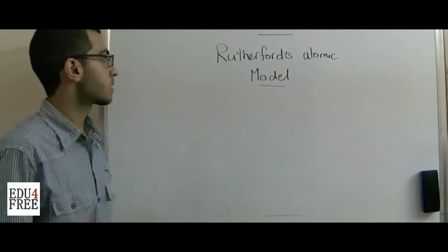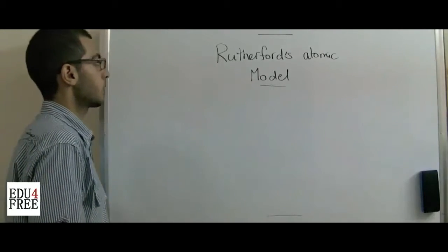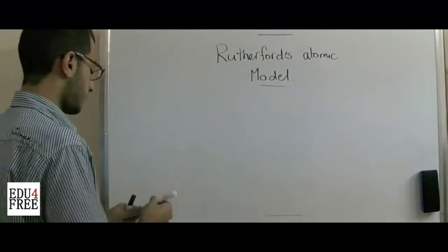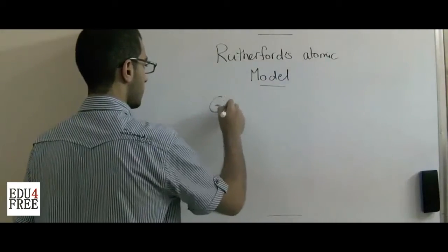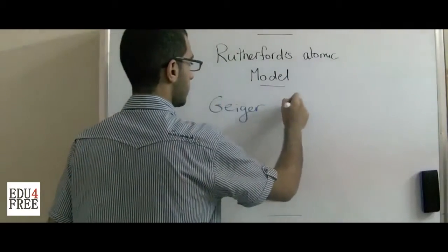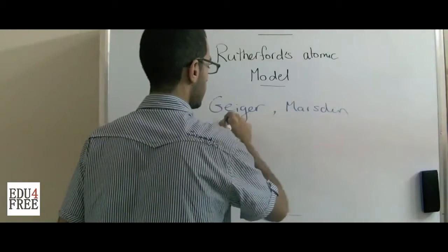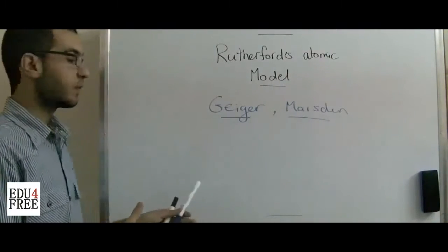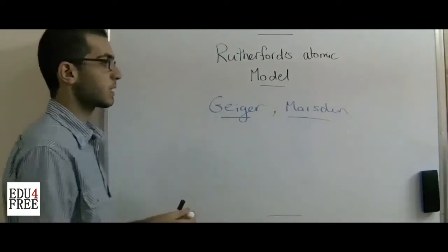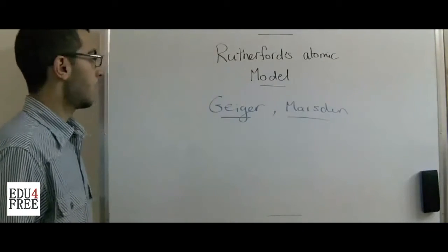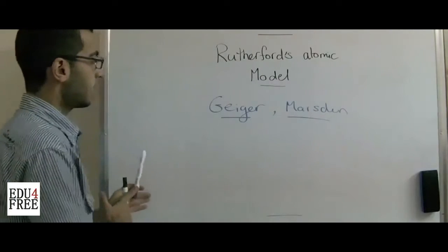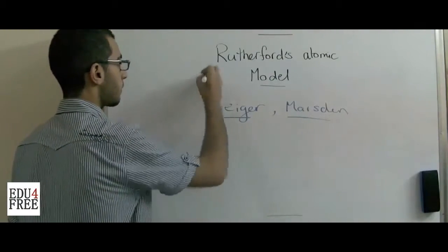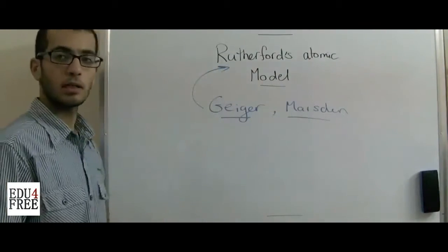Hello everybody and welcome back. We are still in chapter 1 in chemistry and today we will talk about Rutherford's atomic model. Previously, Geiger and Marsden both made an experiment and they proved that the atom is not equally dense. Based on the conclusion of that experiment, carried by those two scientists who were the students of Rutherford, he made his atomic model.